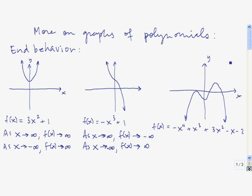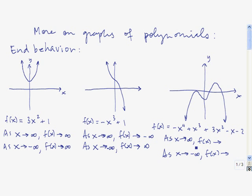For the last case, let's take a look at this quartic. We see that as x goes to infinity, the function values are going down to negative infinity. And similarly, as x goes to negative infinity, the function values are also going down to negative infinity.